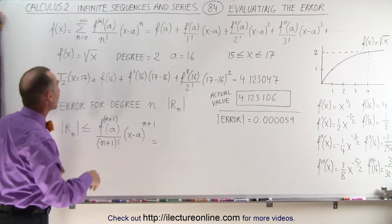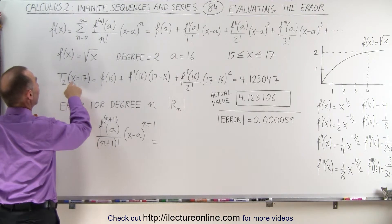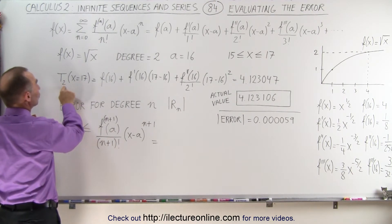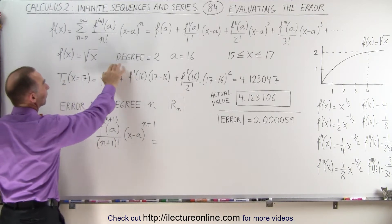In the previous video, we showed you that when we evaluated the function at x equals 17 and only to two to three terms, because when we have degree two,